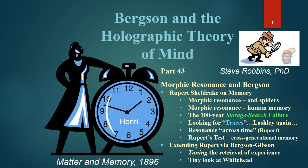Rupert's notion of resonance across time, how it relates to Bergson's, and Rupert's test — an interesting test which involves cross-generational memory, that is, memories and learning being carried across individuals to other individuals in the same species. We'll be extending Rupert via Bergson and Gibson in the tuning of the retrieval of experience, and adding a tiny look at Whitehead since Rupert brings him up. So let's begin resonating, so to speak, to Rupert.